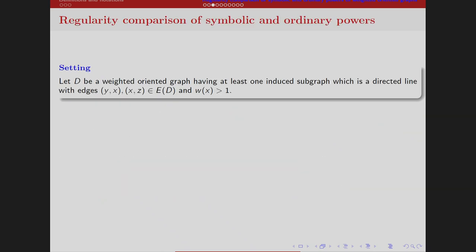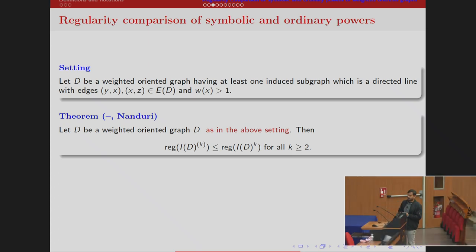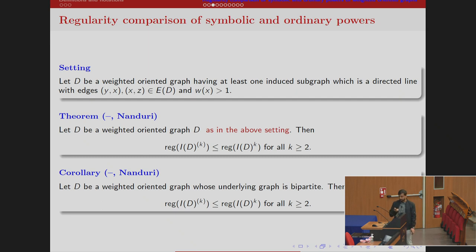We have proved similar results: the regularity of k-th symbolic power is less than or equal to the regularity of k-th ordinary power for all k greater than or equal to 2, if a weighted oriented graph has at least one induced subgraph of a specific form where the weight of vertex x is greater than 1 and x is neither a source nor a sink — it has one outward degree and one inward degree. As a nice corollary, this inequality holds for any weighted oriented bipartite graph.